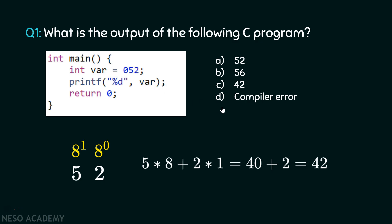Therefore, the answer is C — 42. We are trying to print a decimal value and not an octal value. Therefore, we need to convert this octal value to a decimal value, and this is the conversion process we are performing here. This gives us the answer equal to 42, which is the decimal value corresponding to the octal value 52. That is why the answer is 42 and not 52. Please be careful.